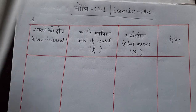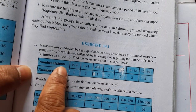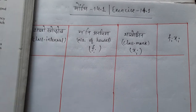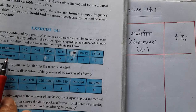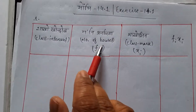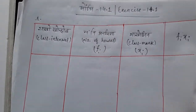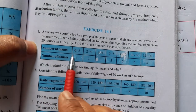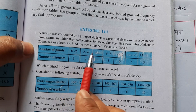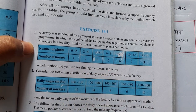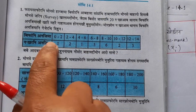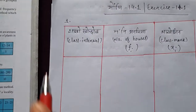The number of plants and the class intervals are set up in the classroom. The class intervals are: 0 to 2, 2 to 4, 4 to 6, 6 to 8, 8 to 10, 10 to 12, 12 to 14.